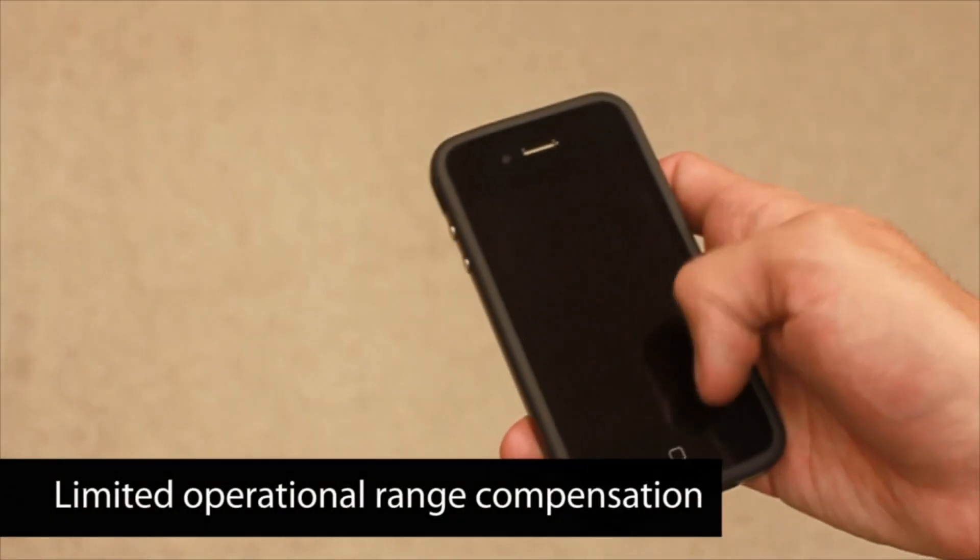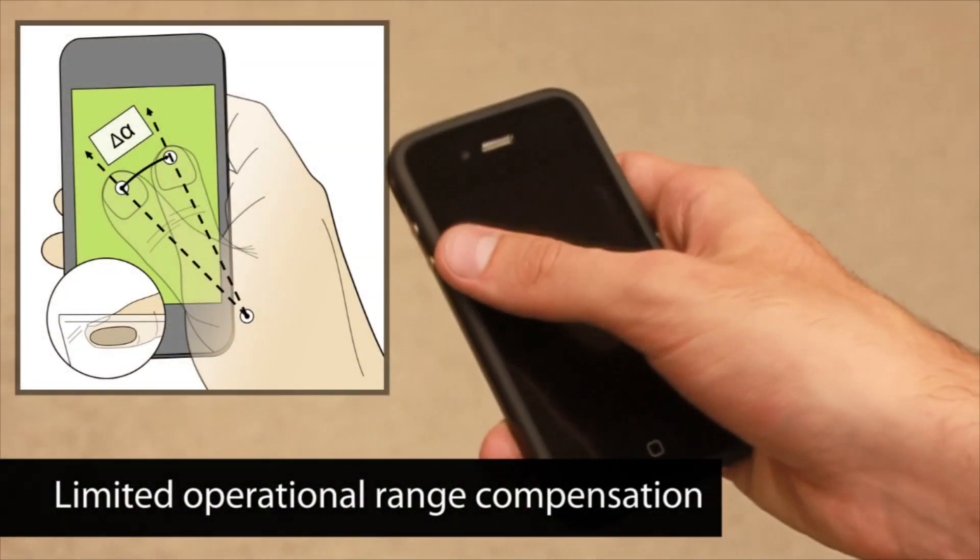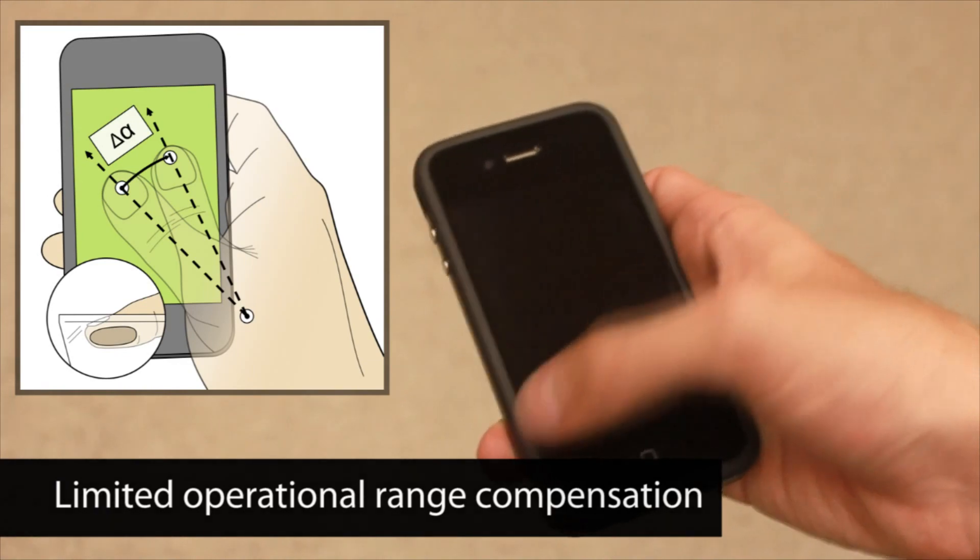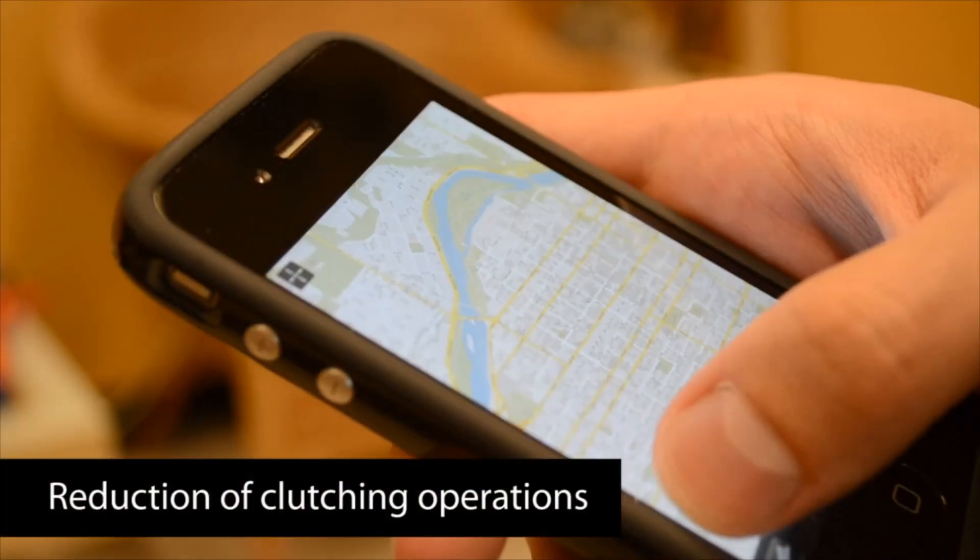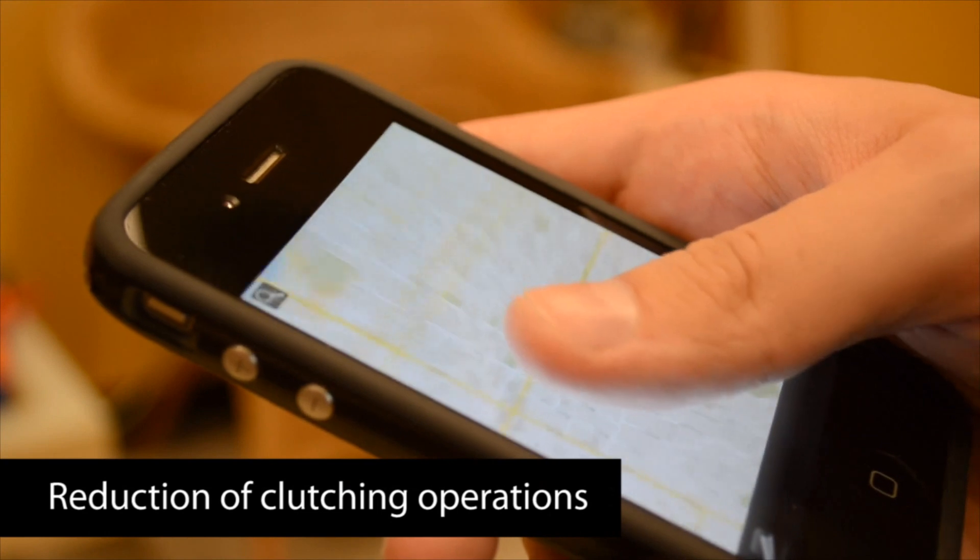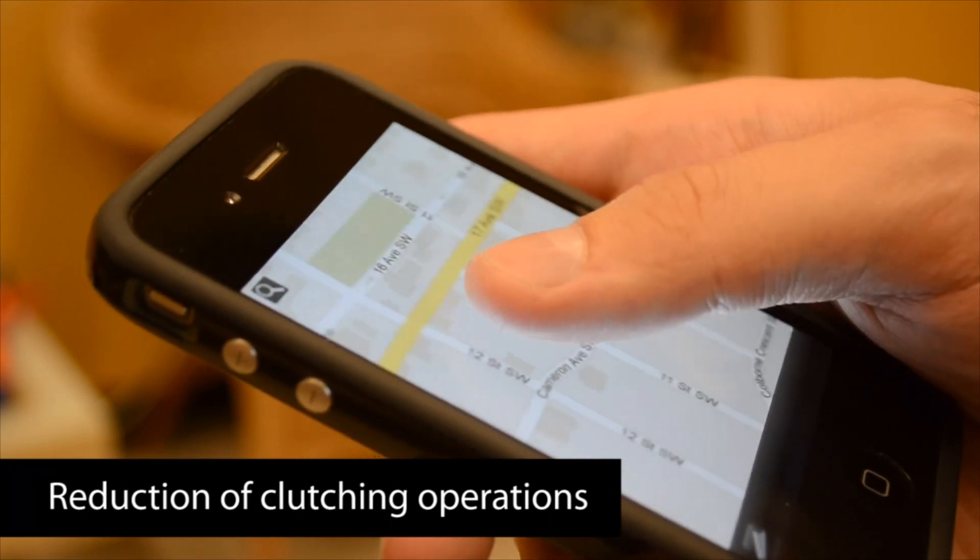Second, it includes adjustments based on the thumb's limited operational range and motor skills while holding the device with the same hand. Third, it reduces the number of clutching operations by not requiring a separate action for switching modes. We implemented the fat thumb interaction technique with a mobile device.